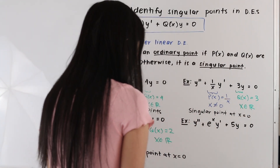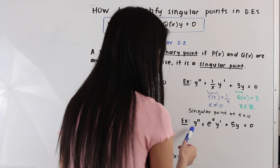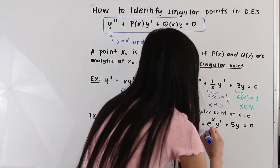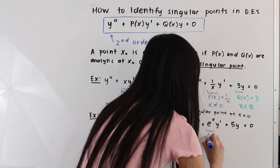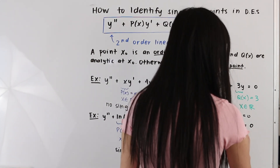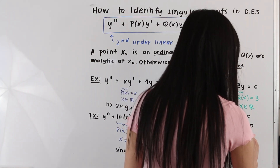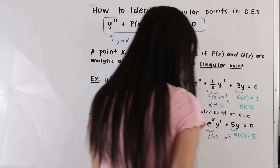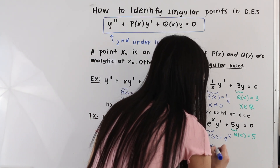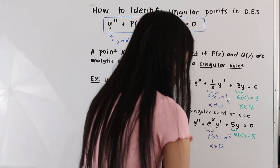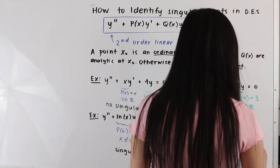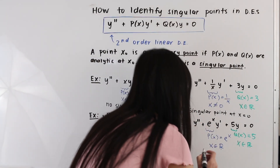In this next example, we have y double prime plus e to the x times y prime plus 5y is equal to zero. Here p of x is equal to e to the x and q of x is equal to 5. Both p of x and q of x are defined for all real numbers, so we have no singular points.